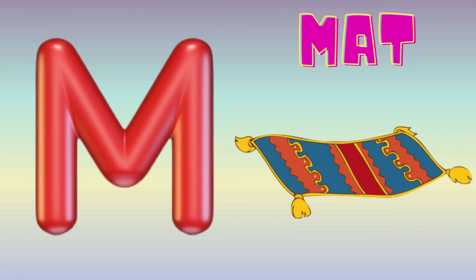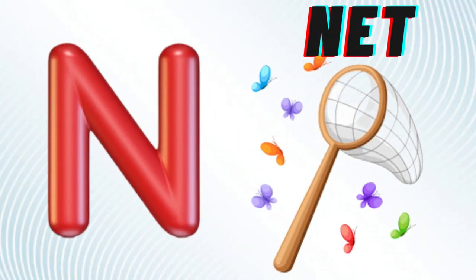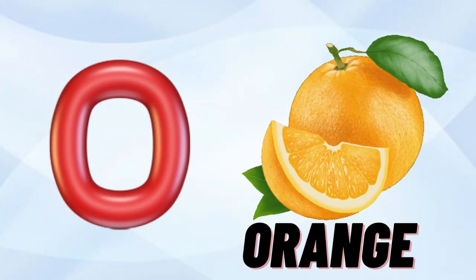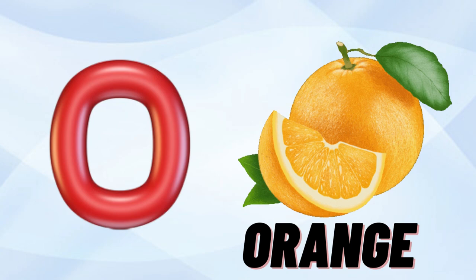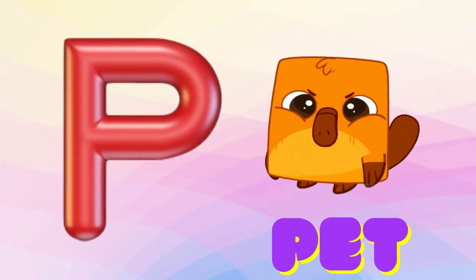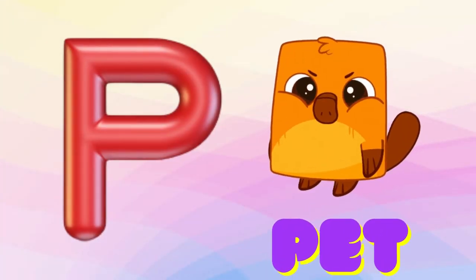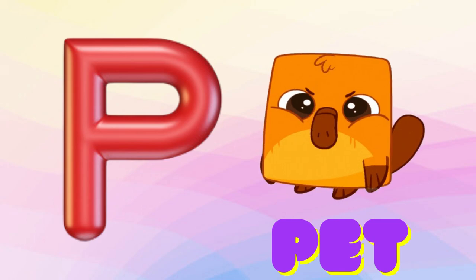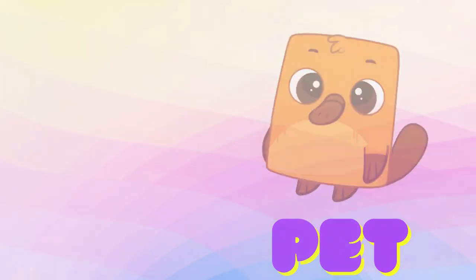M is for Mat, M-M-Mat. N is for Net, N-N-Net. O is for Orange, O-O-Orange. P is for Pet, P-P-Pet.